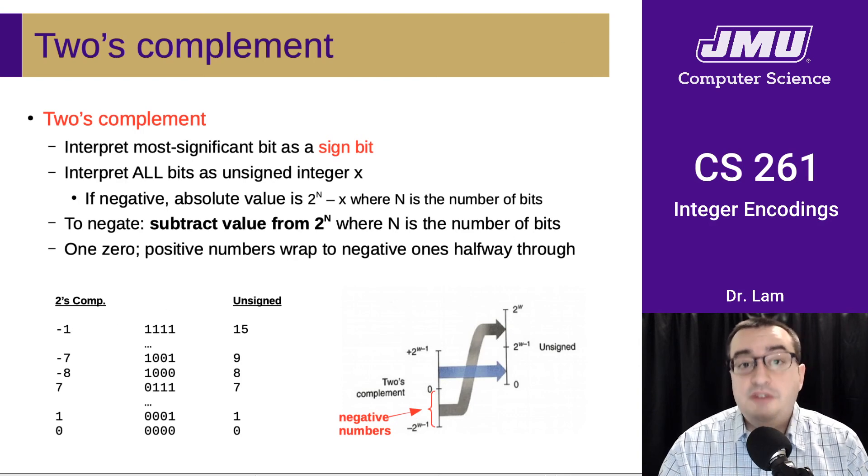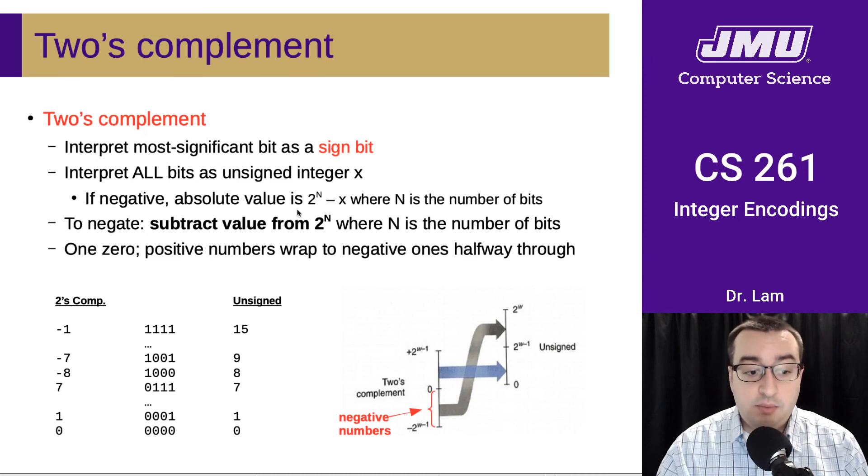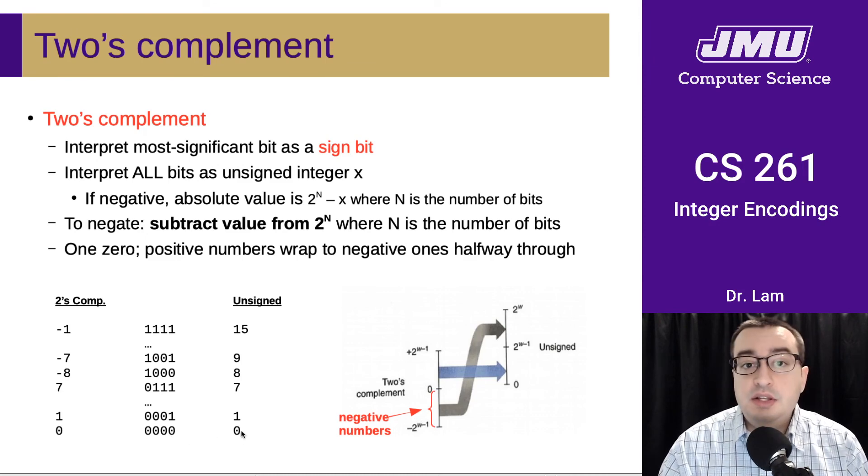And the benefit here is that now we only have one zero. We have the 0, which is the unsigned 0. And because we now only have one zero,